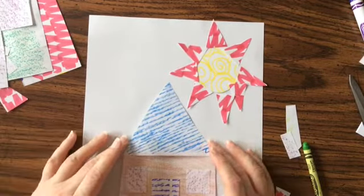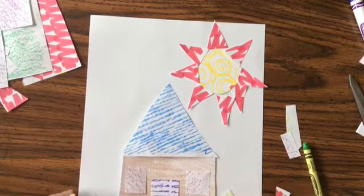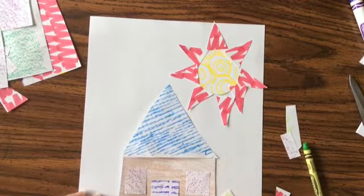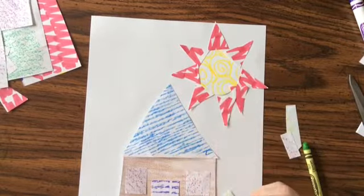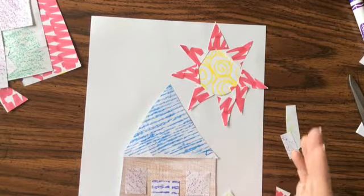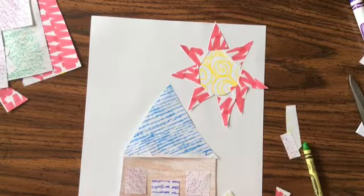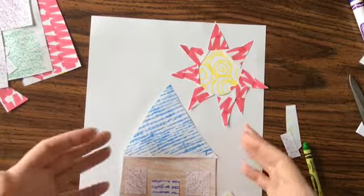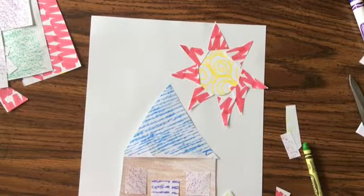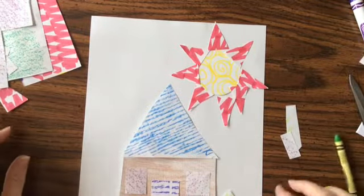Alright. So, once you get yours how you want it, once you've got it arranged, then you can use the glue, whether it's a glue stick or regular glue, to get your pieces so they don't fall off. If you don't have glue, maybe this is more like a puzzle and you take all the pieces down and then you can put them back again later.